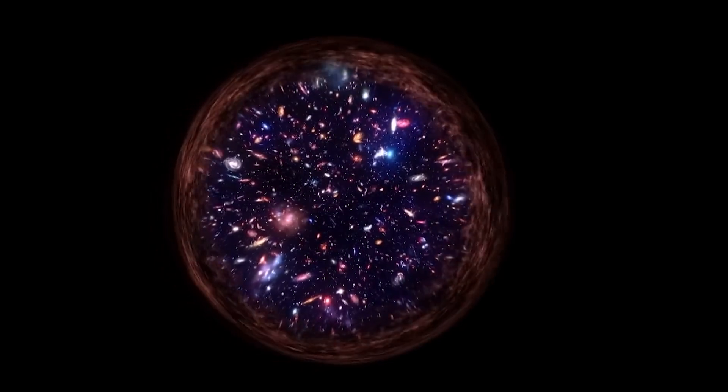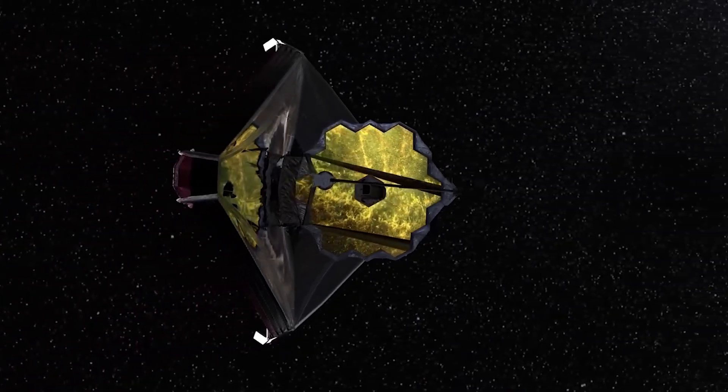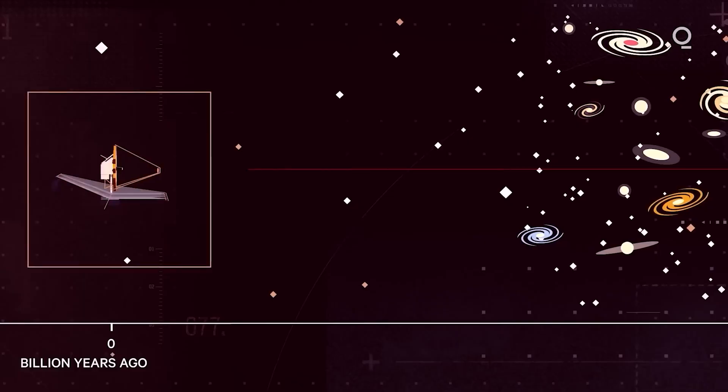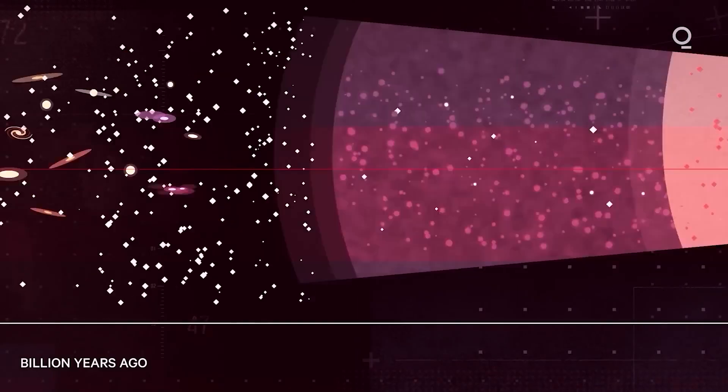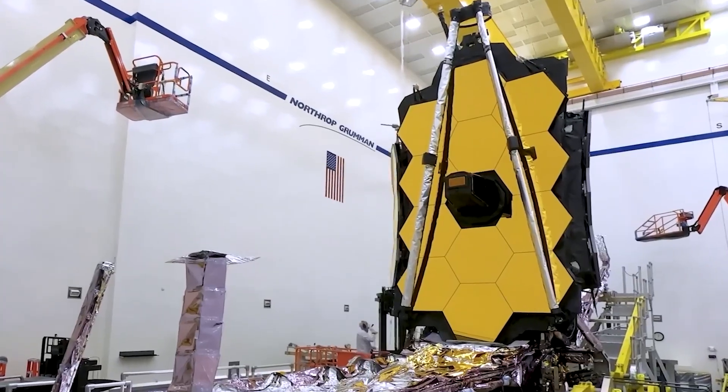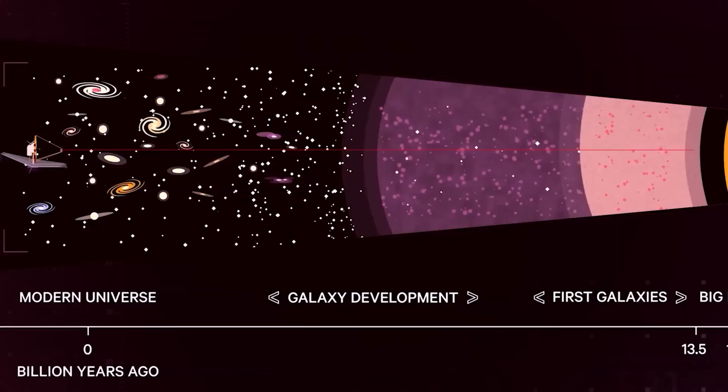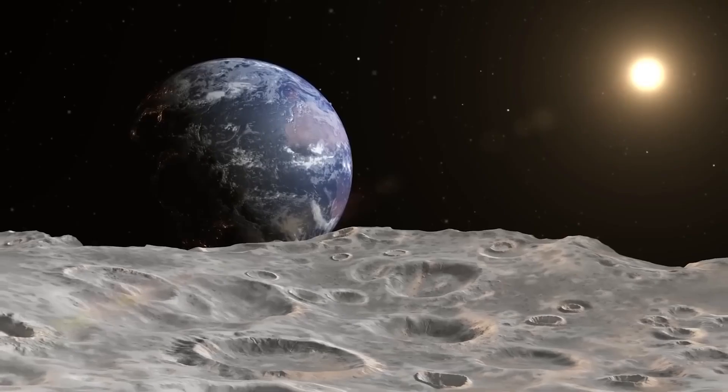With the James Webb Space Telescope being used, you may wonder exactly how advanced it is for this field. According to NASA, this new telescope sent into space is so sensitive to the infrared light it captures that it can detect the heat of a bumblebee even at the distance of the moon. For better understanding, this telescope is 100 times more powerful than the iconic Hubble telescope.